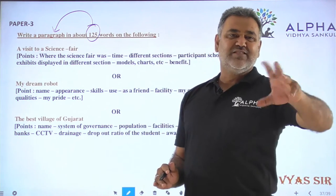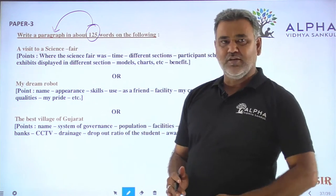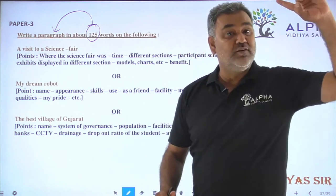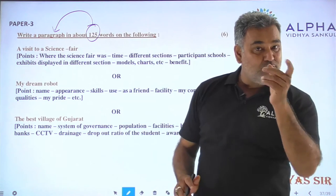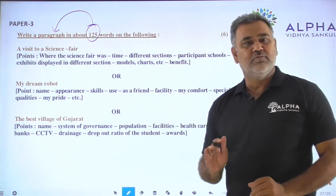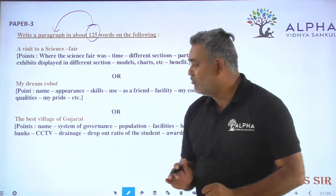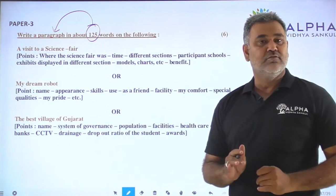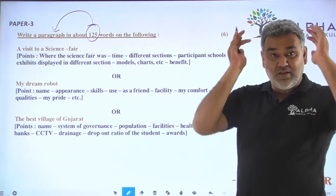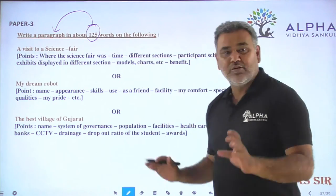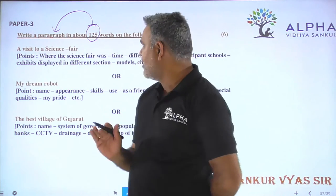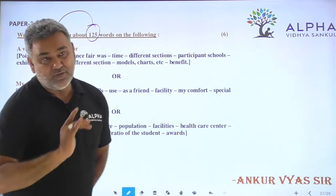When we write about the past tense, we have to write about the subject. I am going to write about the subject of the research. This is the first place in Gujarat. We have to use the subject. We have to take a visit to a science, a simple past tense.